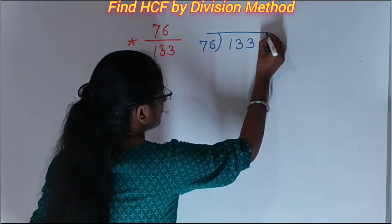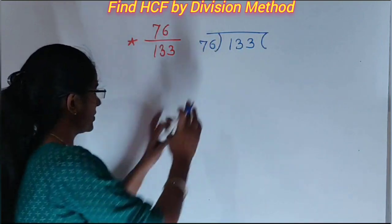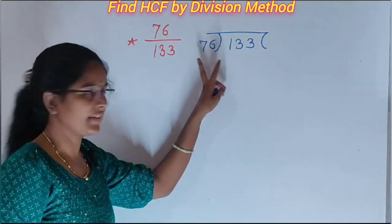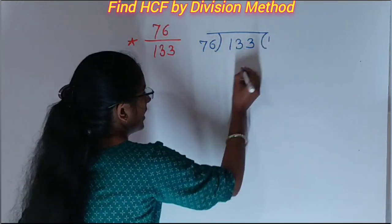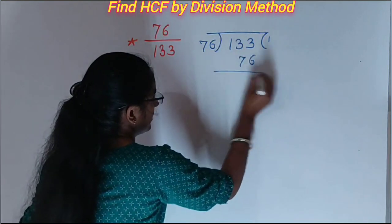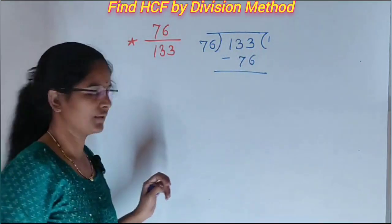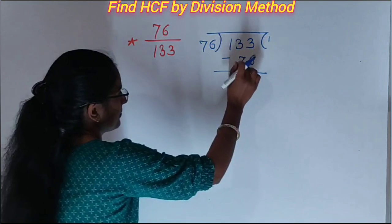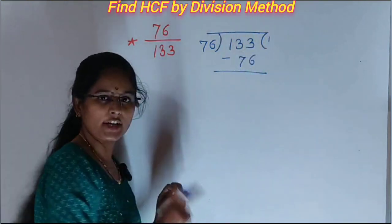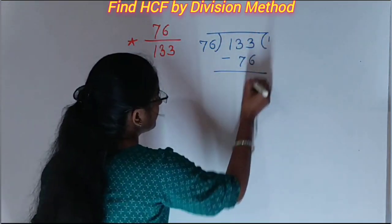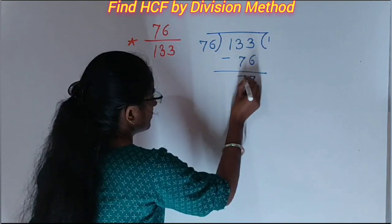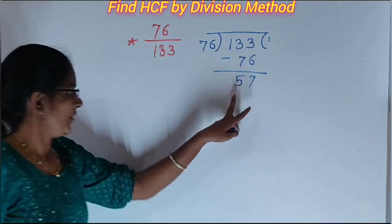Then we can divide 76. 76 ones are 76. Then subtract. When you subtract 76 from 133, then we get 57.